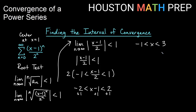Let's note a couple of things. Our center was at x equals 1, and the center of the interval from negative 1 to 3 is indeed 1 — that checks out. We still need to check the endpoints. We need to go back and plug negative 1 and 3 into the original series to see if we get convergence or divergence at those points.